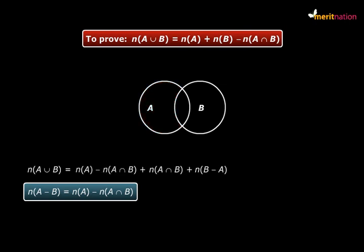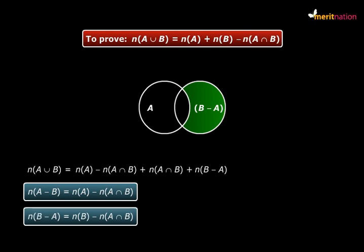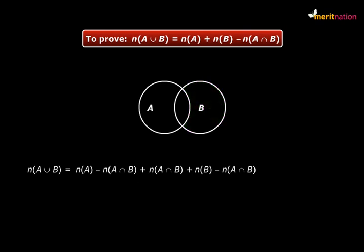Similarly, we can say that n(B minus A) equals n(B) minus n(A intersection B). So we write that as well. n(A intersection B) and n(A intersection B) cancel out. And what we are left with is n(A union B) equals n(A) plus n(B) minus n(A intersection B).